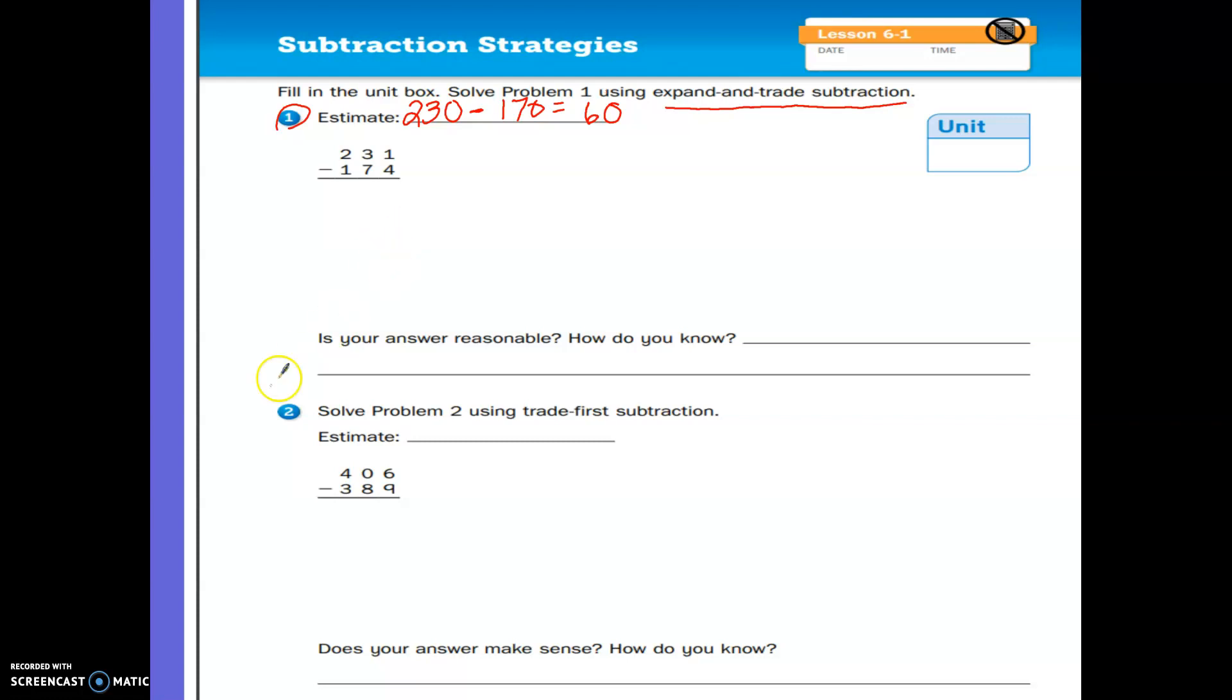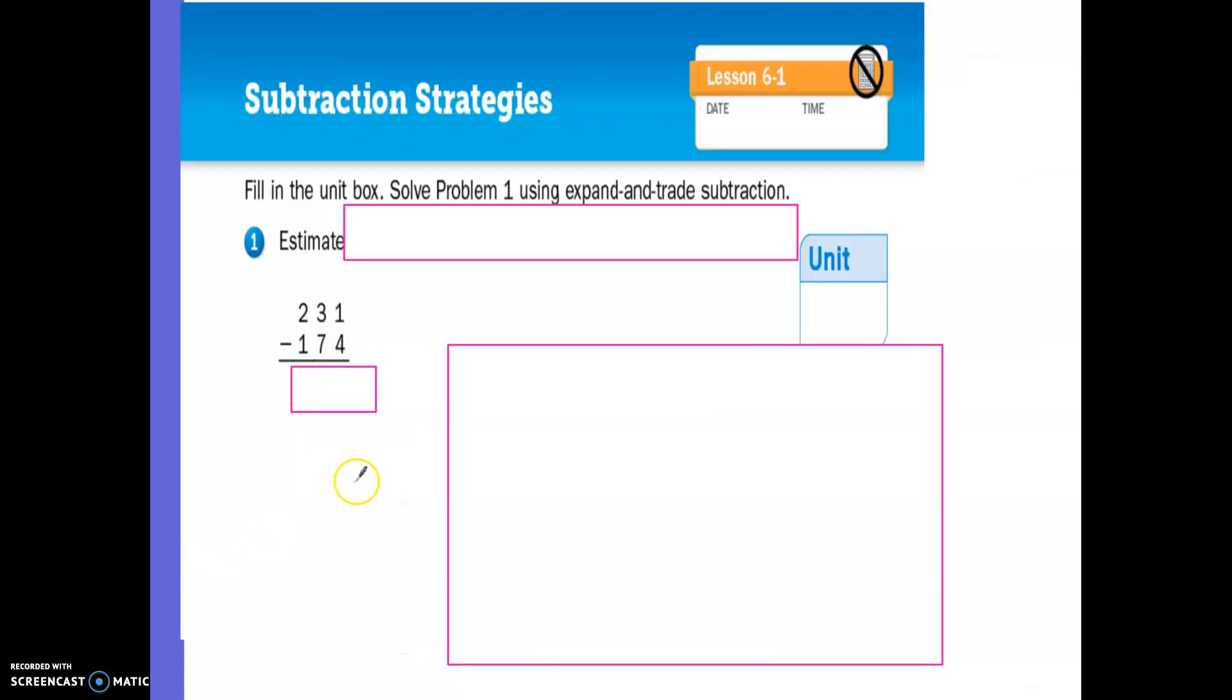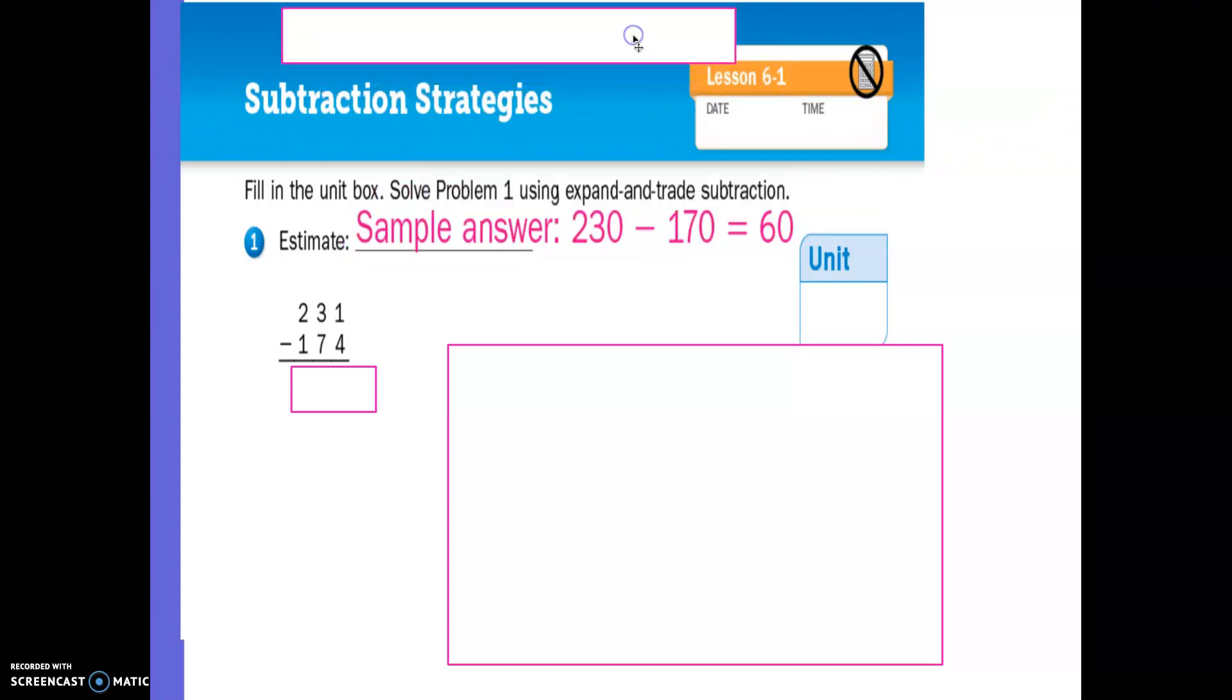Well, it's between 170 and 180. It's also between 150 and 200. It's also between 100 and 200. Now, here's the thing. When I'm doing an estimation, I want to use numbers that I know that I can subtract in my head. Well, I can subtract this in my head. So I'm going to round that to 170. So I'm going to say if I'm going to subtract 230 minus 170, my estimation is going to be 60.